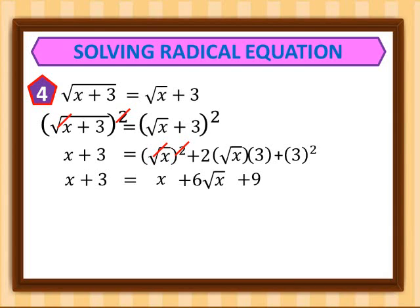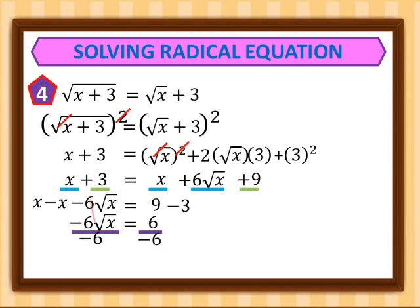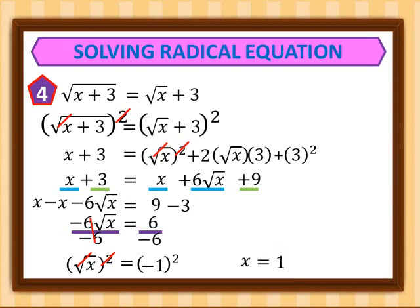We combine like terms, moving variables to the left and constants to the right. x minus x is 0, leaving negative 6 square root of x equals 9 minus 3, which is 6. Dividing everything by negative 6, we get square root of x equals negative 1. Squaring both sides gives us x equals 1.